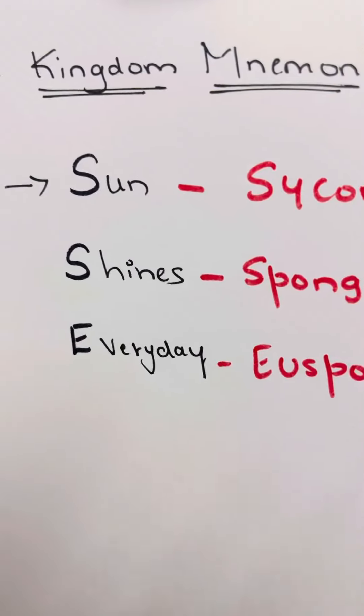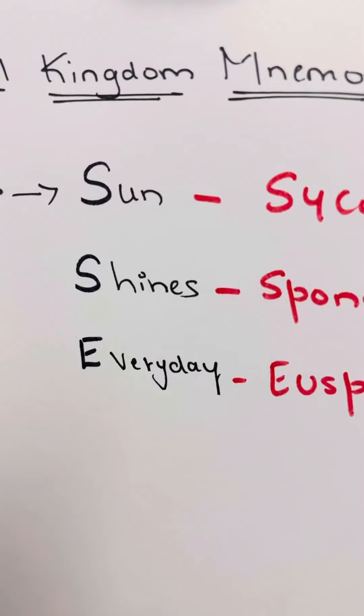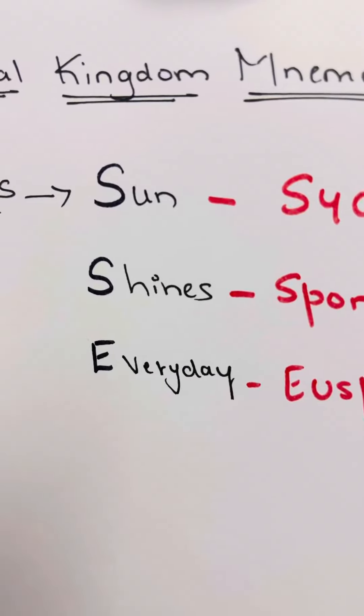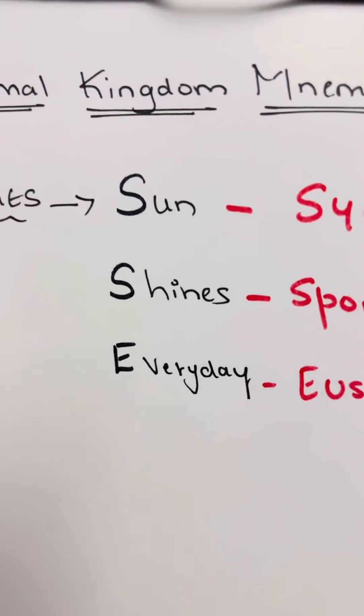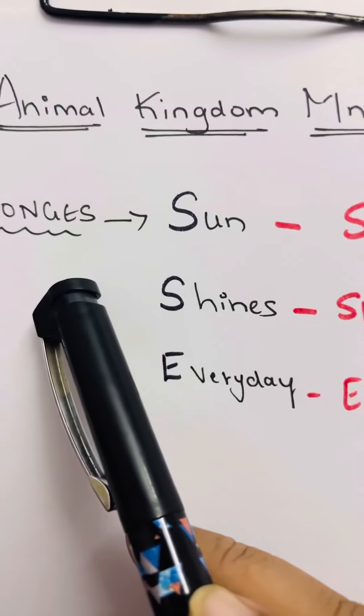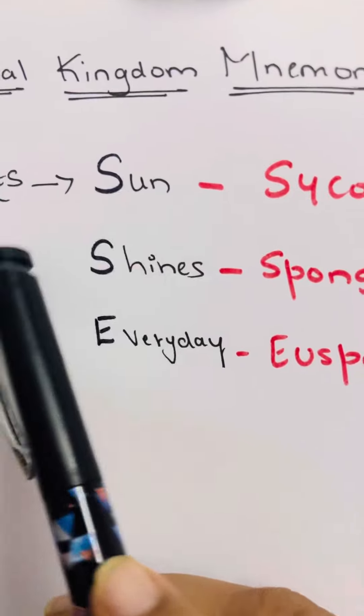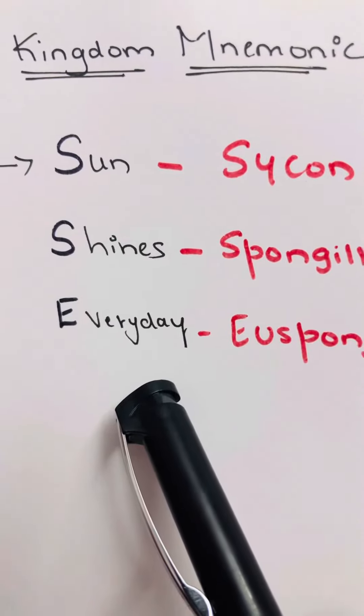I have uploaded other videos also on Animal Kingdom, that is different tricks to remember the examples of different phyla. So now I'm here with the mnemonic to remember examples of sponges: sun shines every day.